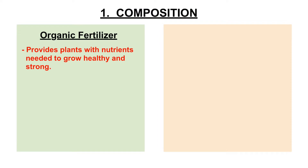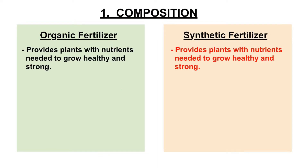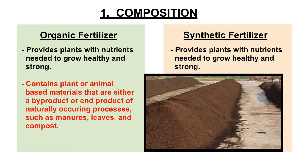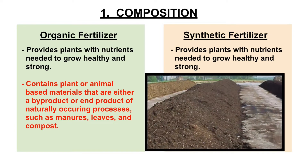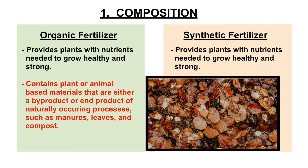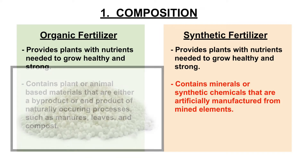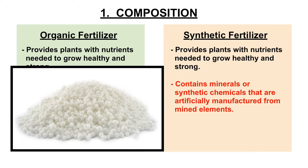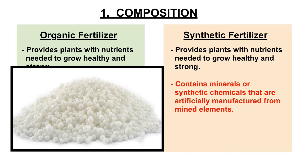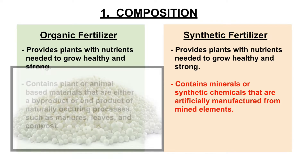1. Composition. Both organic and synthetic fertilizers contain nutrients that help plants grow up healthy and strong. Organic fertilizer contains plant or animal-based materials that are either a by-product or end-product of naturally occurring processes, such as manure, leaves, and compost. Synthetic fertilizer, on the other hand, contains minerals or synthetic chemicals that are artificially manufactured from mined elements.